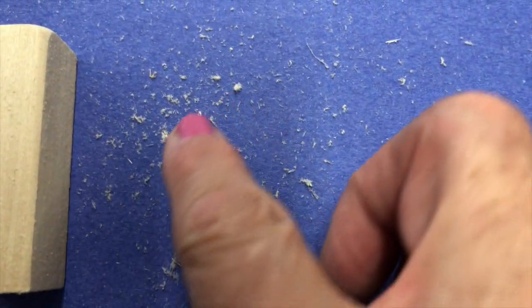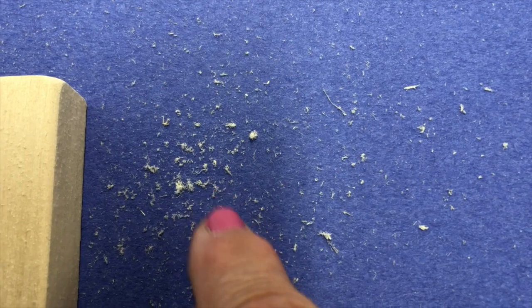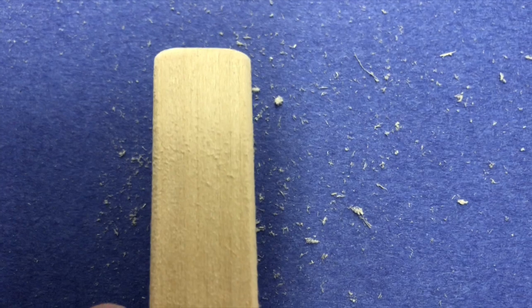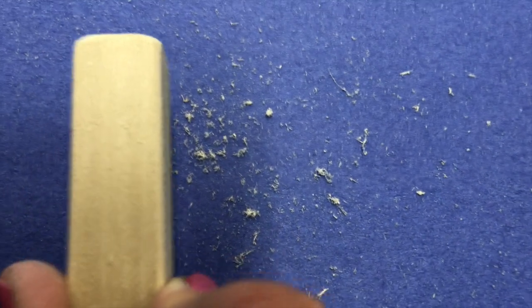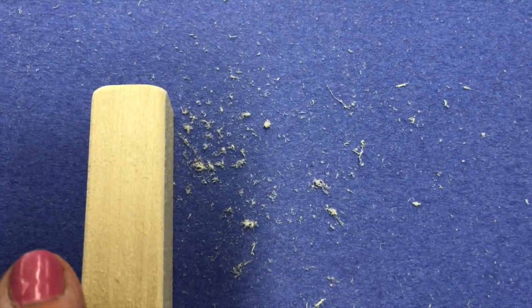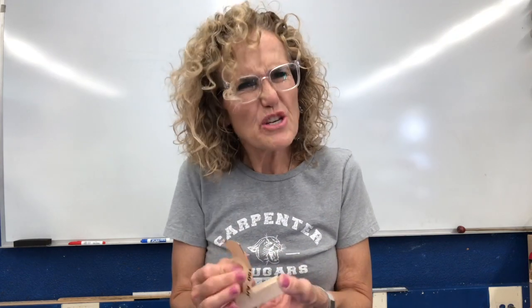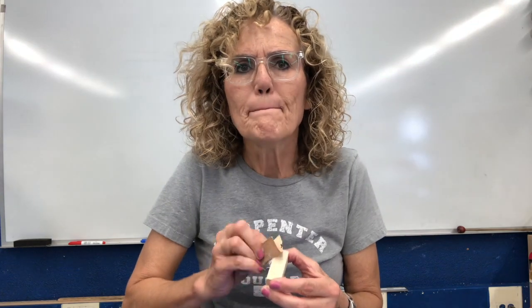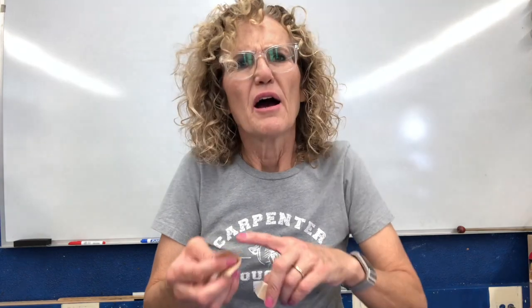And look at this — this is sawdust. It's just tiny little pieces of wood that came off. Oh, look, it blows around when I talk. That came off of the wood when I was sanding it. I'm going to sand mine a little bit more. Boys and girls, I noticed something interesting — when I rub back and forth on the wood, the sandpaper seems to get hot.